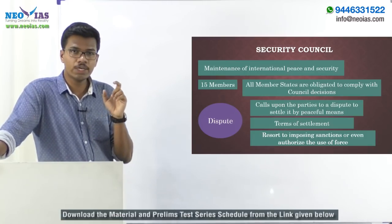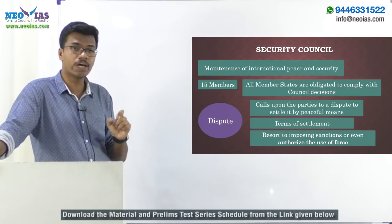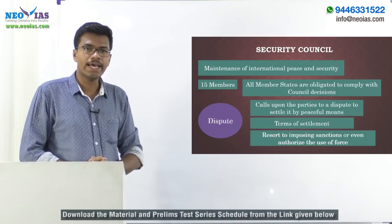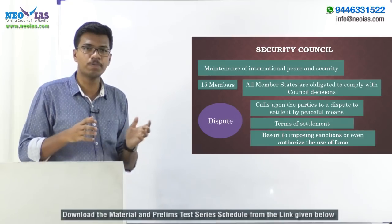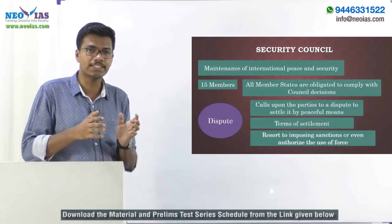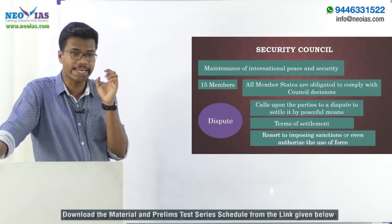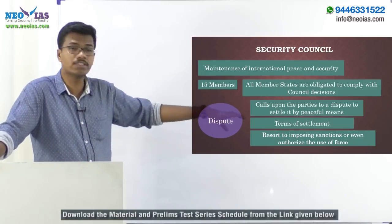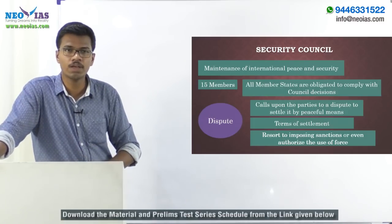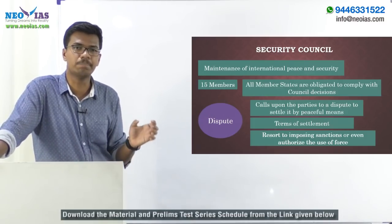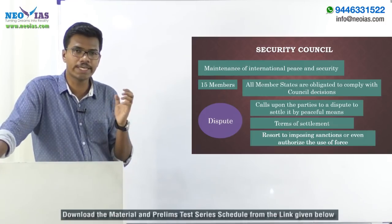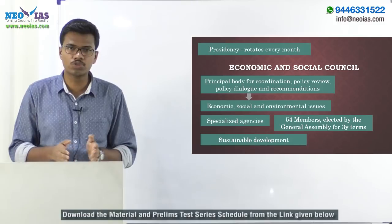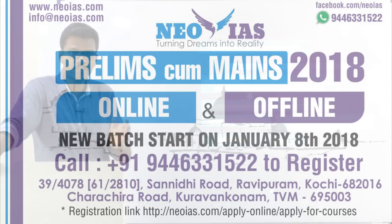The UN Security Council can negotiate terms of settlement between disputing parties. If a dispute becomes a threat to international peace and security, the Security Council can impose sanctions or even authorize the use of force against any party that threatens international peace and security. The presidency of the UN Security Council rotates among its members every month.